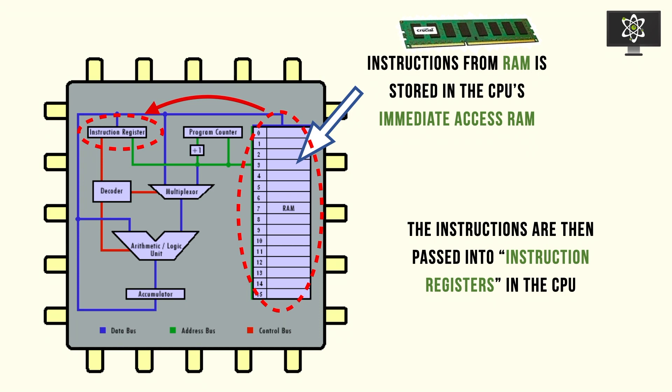The instructions are then passed into what is known as an instruction register in the CPU. This acts as another layer of caching in order for the CPU to execute things quicker. Caching reduces delay time in these connections.